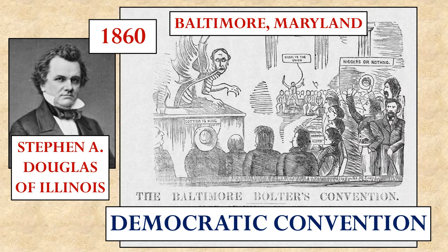Weeks later, the Democratic Party would try again, holding another convention in Baltimore, Maryland, this time without the southern delegates, where they chose what they felt was a compromise candidate, Stephen A. Douglas of Illinois. Stephen A. Douglas came from an anti-slavery state, but he was not as vehemently against slavery as other people were in the North. There was a feeling that he might be able to bridge the two sides, but it proved that the time for such compromise was past.